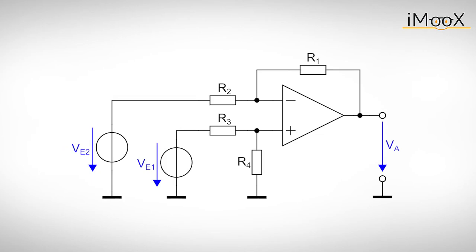Quite the opposite of the summing amplifier is the differential amplifier which gives an output voltage proportional to the difference between two input voltages. We again use the superpositioning principle and investigate Ve1 first.